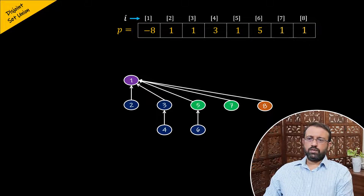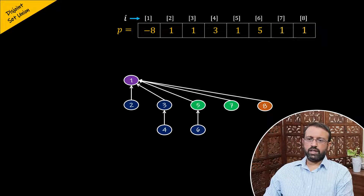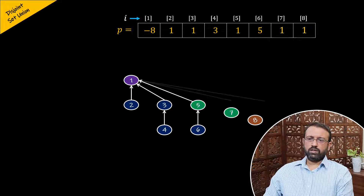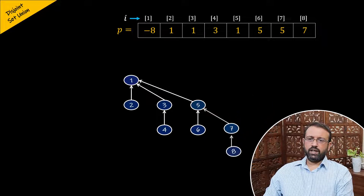The purpose of making nodes on the path from a node to the root into children of the root is that subsequent find operations on those elements will directly lead us to the root of the tree. So this is how the find operation using the collapsing rule is performed on disjoint sets.